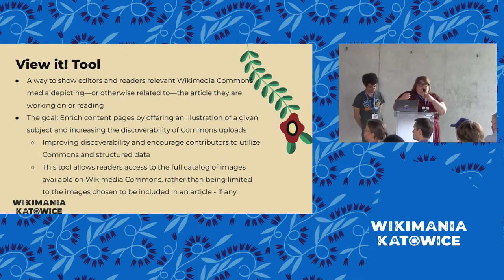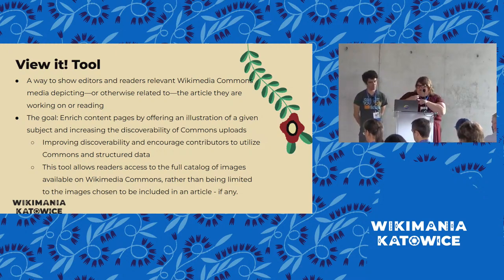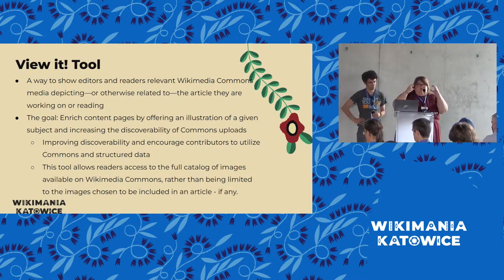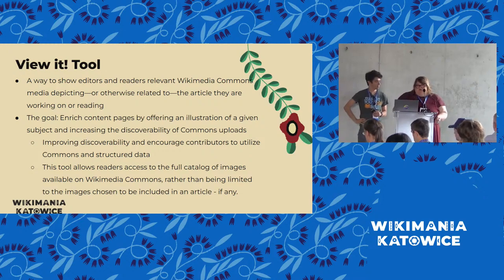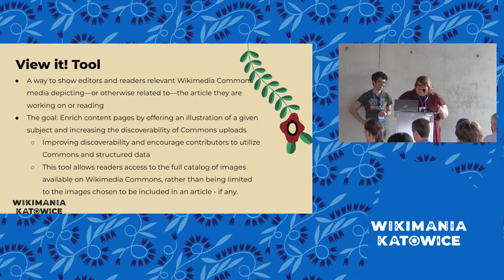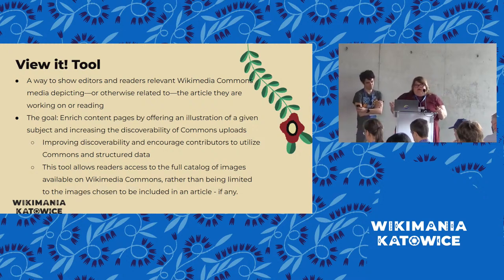For example, I work at the National Agricultural Library — our ViewIt shows you pictures of our building, pictures of collections, and stuff like that. It all depends on what kind of metadata you've added. As long as you're linking things back to your institution, you should get a good example of what your institution is about. The goal is to enrich content pages by offering an illustration of a given subject and increasing the discoverability of Commons uploads. This tool allows readers access to a full catalog of images available on Wikimedia Commons, rather than being limited to the images chosen to be included in an article.